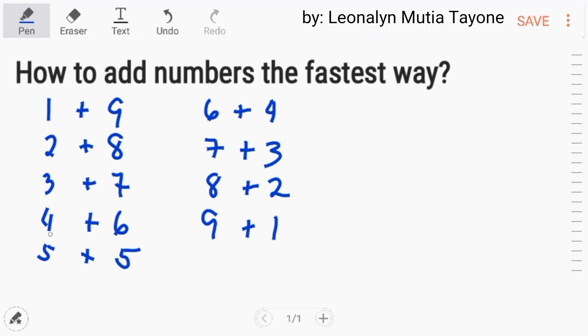Nakita nyo, 1, 2, 3, 4, 5, 6, 7, 8, 9, tapos yung isa, baliktad lang, 9, 8, 7, 6, 5, 4, 3, 2, 1. Yan yung mga pair of 10s.